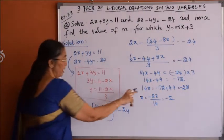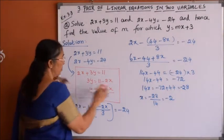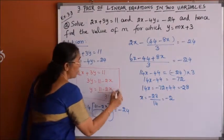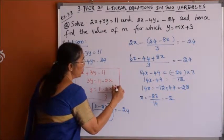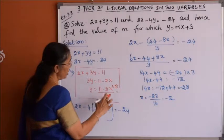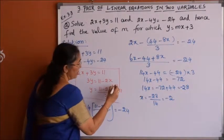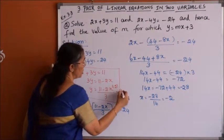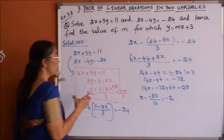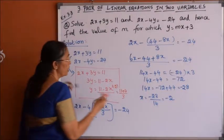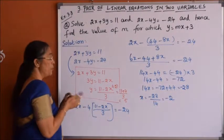Now we have x equals minus 2. Substituting that x value into y equals 11 minus 2x divided by 3: y equals 11 minus 2 times minus 2, which is 11 minus of minus 4, so 11 plus 4 by 3, that is 15 by 3, giving y equals 5.